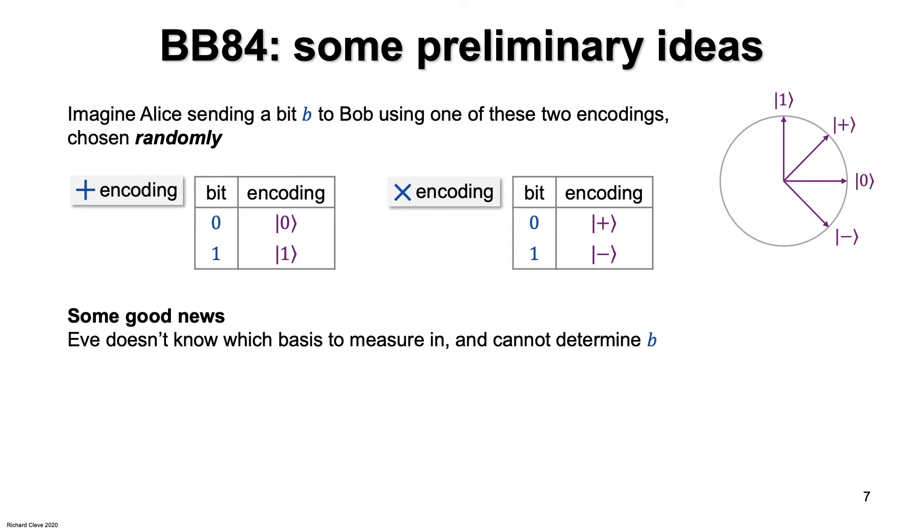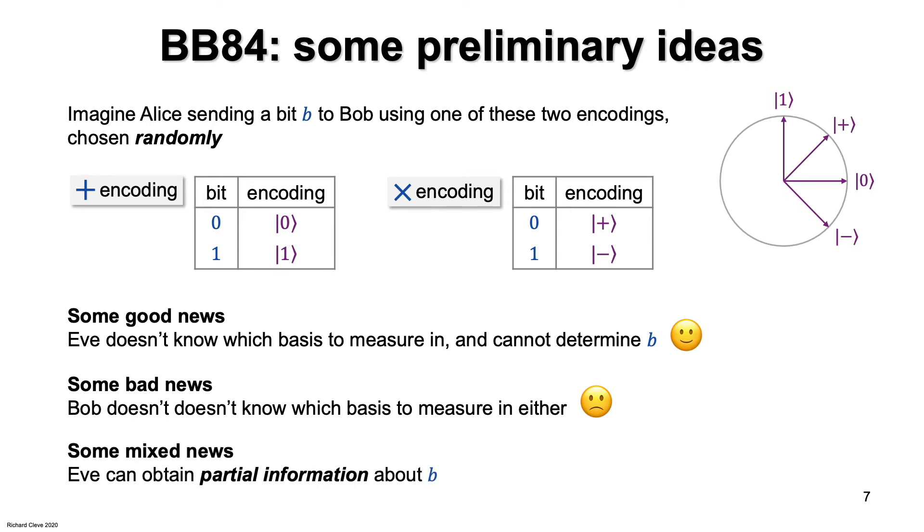Now, what can we say about this way of encoding Alice's bit? Some good news is that there's no way for Eve to determine exactly what Alice's bit is. Eve doesn't know which basis to measure in. But here's some bad news. Bob is in the same boat as Eve. He doesn't know which basis to measure in either. And here's some mixed news. Eve can obtain partial information about the bit B. A particularly good measurement basis is the one that's halfway between the rectilinear basis and the diagonal basis, illustrated by the red lines in the diagram. That's good for Eve, but kind of bad news for obtaining security.